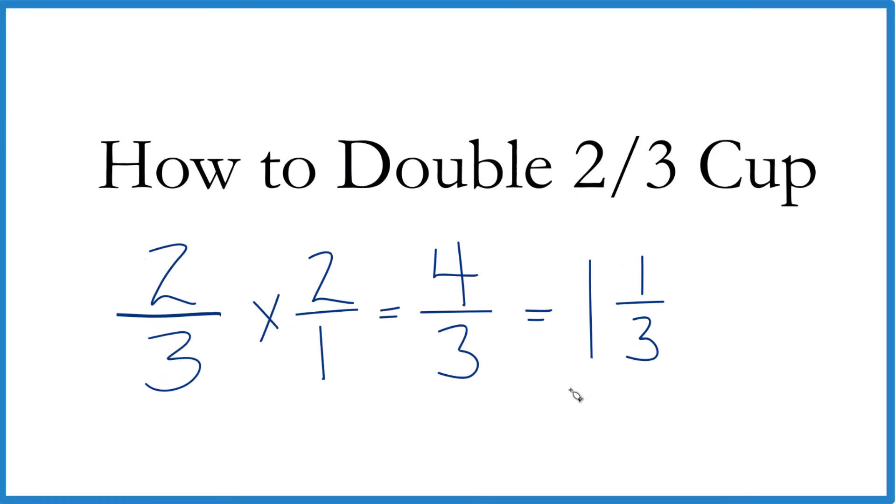There is one other way you could figure this out. You could say three that goes into four one time. One times three is three. And then you'd have one left over. You keep the three the same. And four-thirds, that would equal one and one-third.